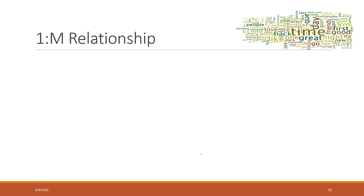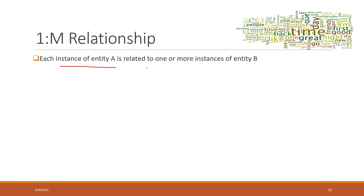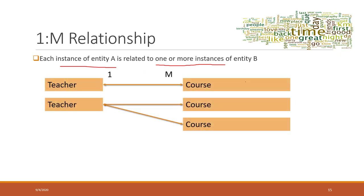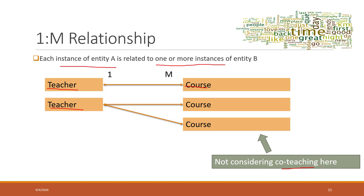We also have one-to-many relationship, which means one record in table A is related to one or more records in table B. One scenario is that one teacher will teach multiple courses — this teacher teaches one class, and also this teacher teaches two classes. We assume there is only one teacher for each single class, and one teacher can teach multiple classes.